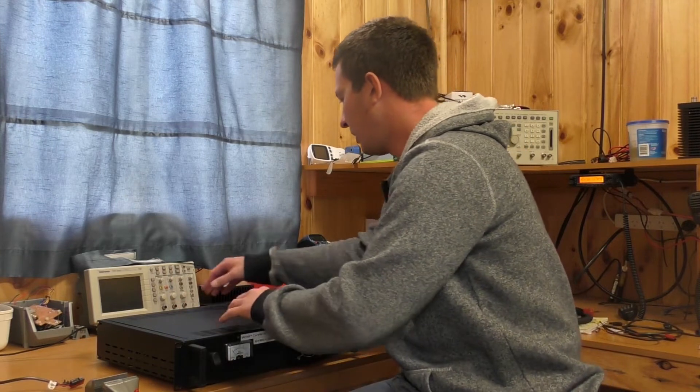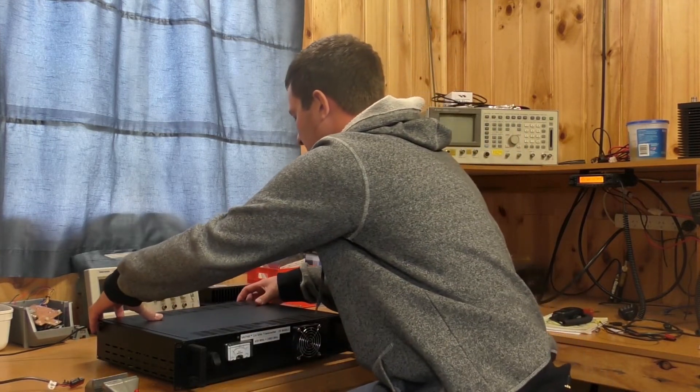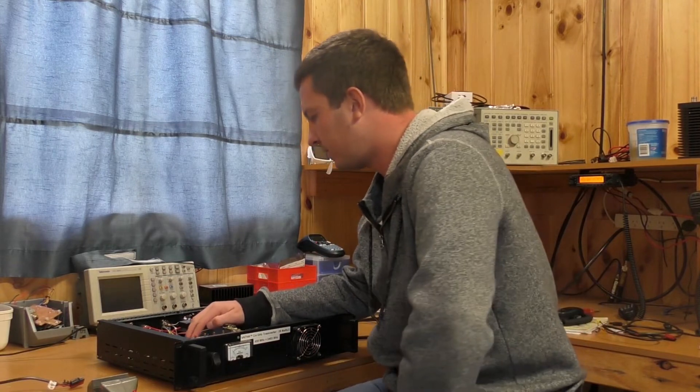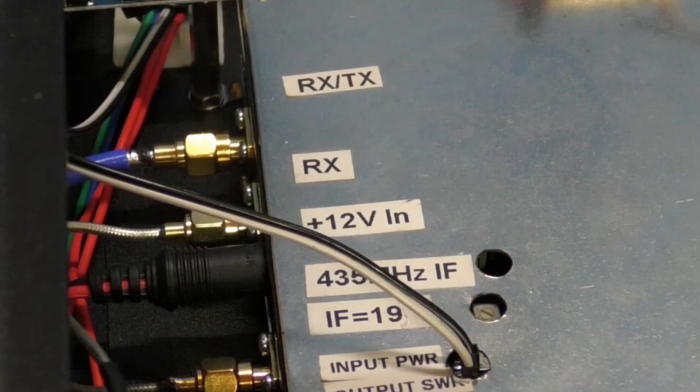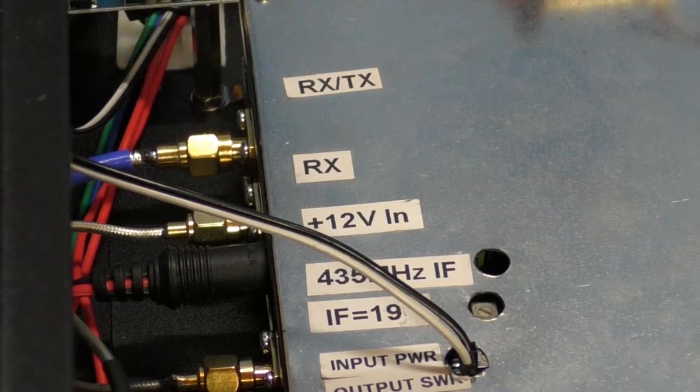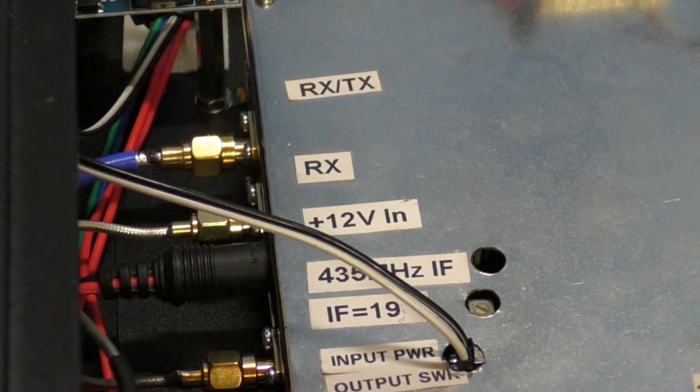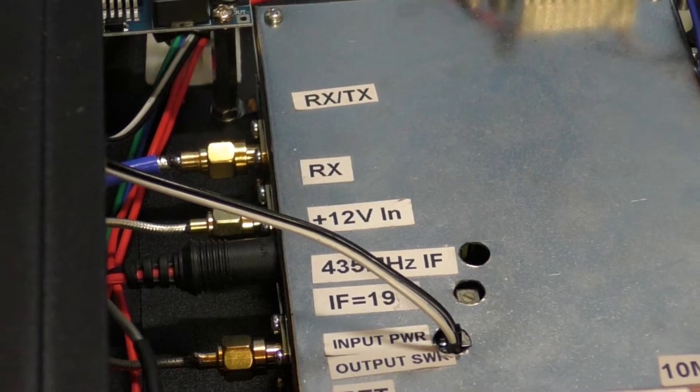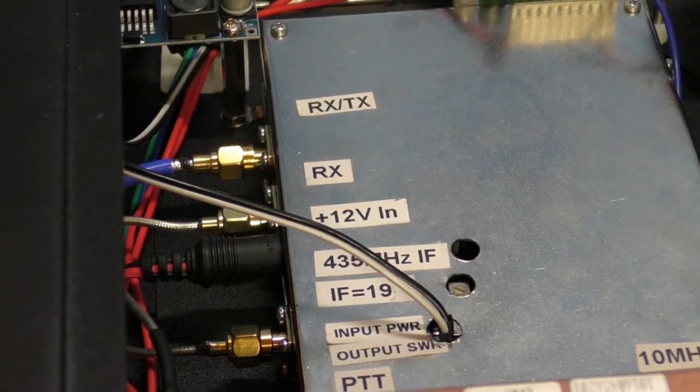So anyway we'll open it up and I'll show you what's inside. Right so I've opened it up and inside here is the 13 centimeter transverter box. You can see there that I've got everything labeled so it really helps to find out where things need to go and for the connections when I'm just looking at it quickly.